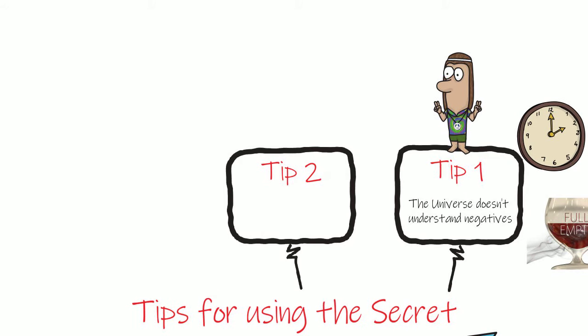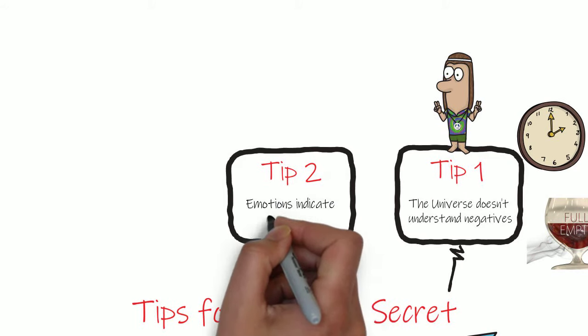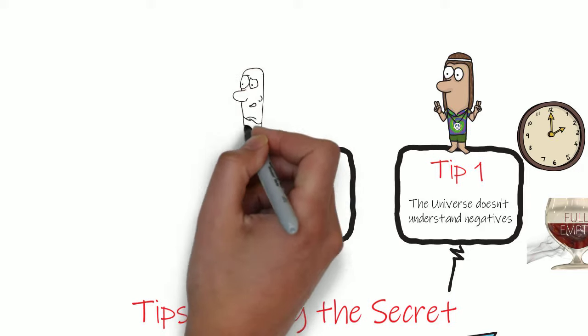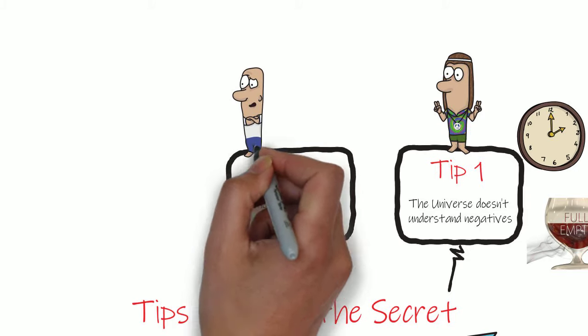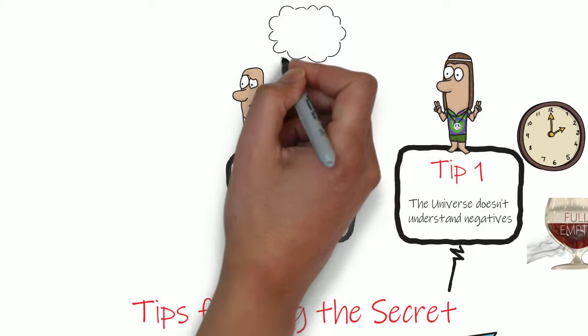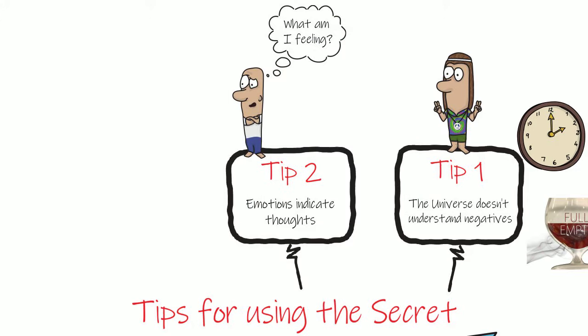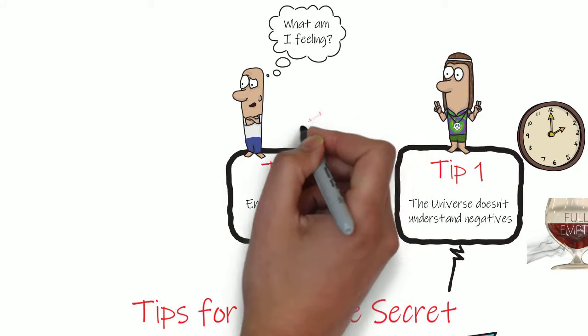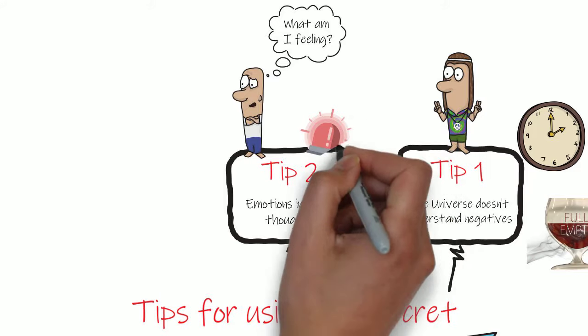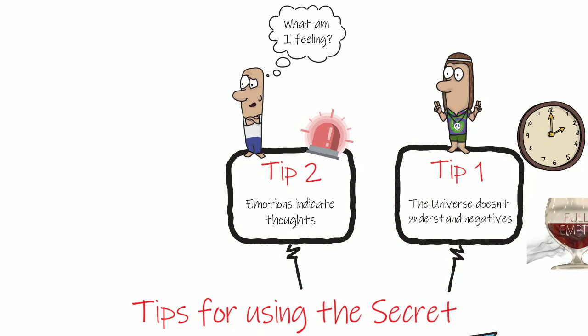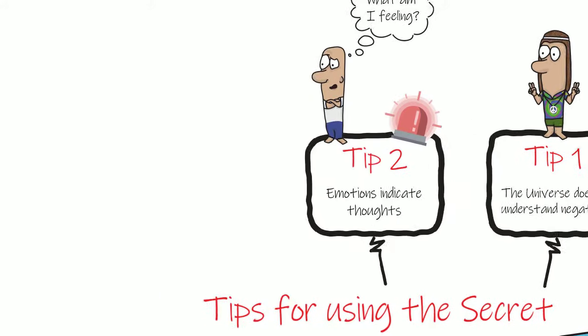Tip 2: Emotions indicate thoughts. If you're struggling to figure out what thoughts you are having at any given time, you can always use your emotions as a guide to what you are thinking, as you cannot have negative emotions and positive thoughts or positive thoughts and negative emotions. Thus, your emotions can be an early warning system to indicate when your thoughts are negative.